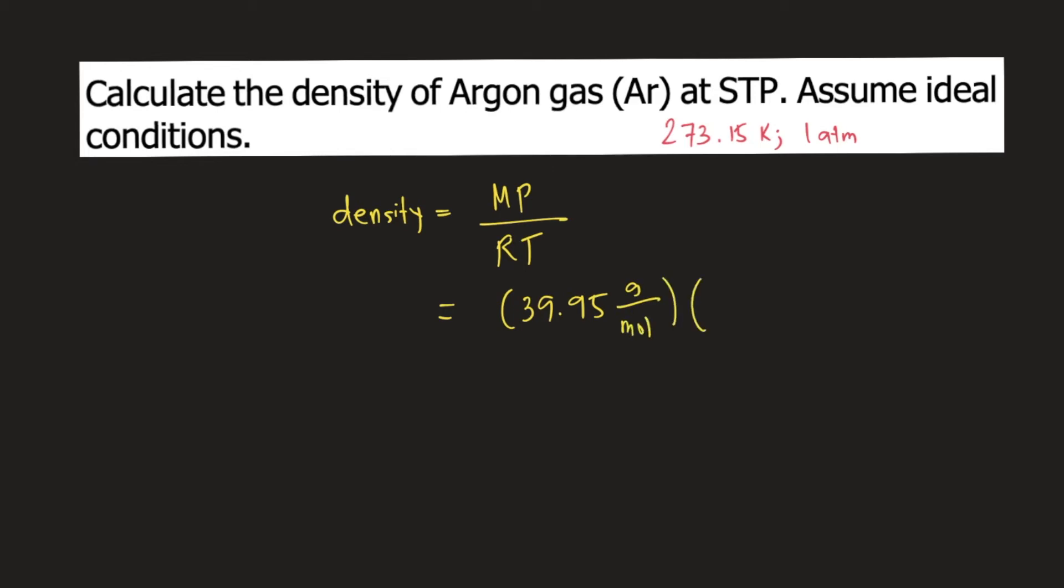P is the pressure. So we have the standard pressure, 1 atm, divided by R, the gas constant, 0.0821 liter atmosphere per mole Kelvin. And T is temperature. So the standard temperature is 273.15 Kelvin.